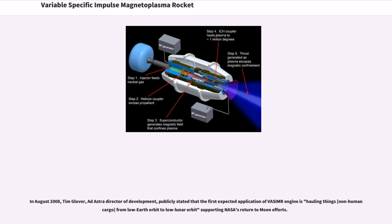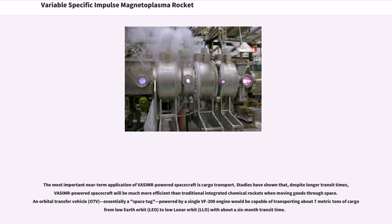In August 2008, Tim Glover, Ad Astra Director of Development, publicly stated that the first expected application of VASIMR engine is hauling things, non-human cargo, from low Earth orbit to low lunar orbit, supporting NASA's return to moon efforts. The most important near-term application of VASIMR-powered spacecraft is cargo transport.